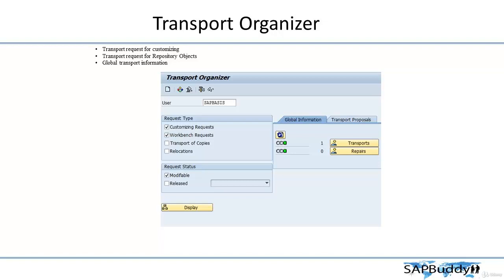Let's see what is the transport organizer. Using the transport organizer, that is SE09, we can view the customizing request by selecting that option, and we can also view the workbench request which is a repository object. You can also see something called global information, which gives you the detail of the TRs which were imported to our consolidation system.